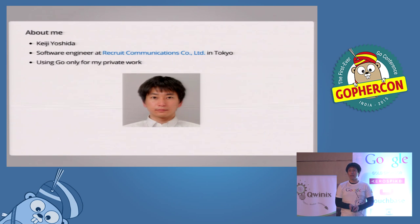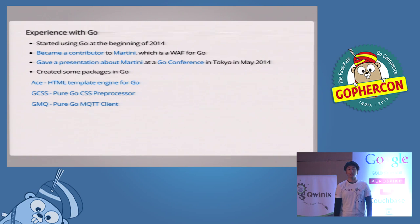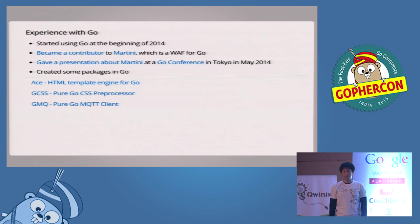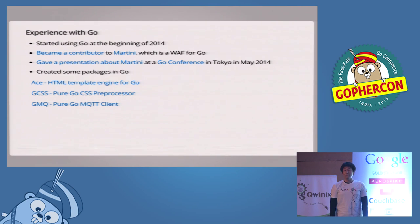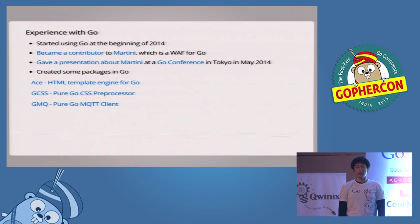And I created several packages in Go. For example, I created an HTML template engine for Go, like Haml, and a pure Go CSS preprocessor such as Sass. And recently, I created an MQTT client in Go. The goal of this presentation is to share my knowledge of creating a successful Go package. I've created and destroyed several packages, and I've learned some good tips for creating a Go package through trial and error, and I'd like to share these tips with you.